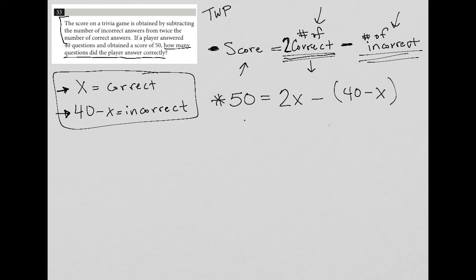Let's simplify this now. I have 50 equals 2X. This negative sign distributes across the parentheses, so minus 40 and then plus X, because negative times negative is positive. Now I have like terms on the right side. So I have 50 equals 3X minus 40, and I can add 40 to both sides.